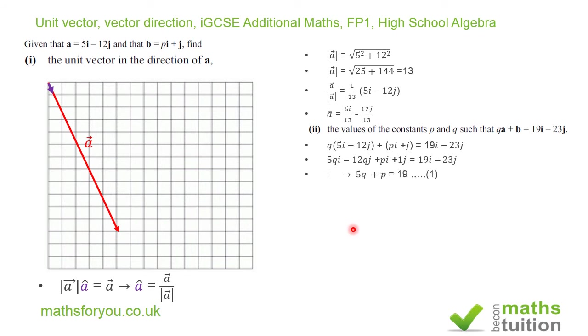Now for the i component we have that 5q plus p is equal to 19. And for the j components we have that 1 minus 12q is equal to minus 23.